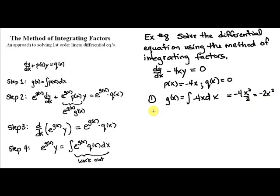Step two is to raise e to that power, e to the g(x), and distribute it through the function. So we're going to multiply e to the negative 2x squared through our original equation. We'll have e to the negative 2x squared times dy/dx minus e to the negative 2x squared times 4xy equals e to the negative 2x squared times 0, which is just 0.